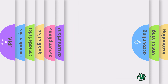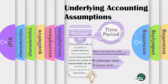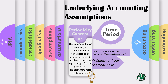Another assumption is the periodicity concept, or time period. In this assumption, an entity's life can be meaningfully subdivided into equal time periods for reporting purposes. By convention, the accounting period or fiscal period is one year or a period of 12 months. The accounting period may be a calendar year or a natural business year. Both are 12 months.